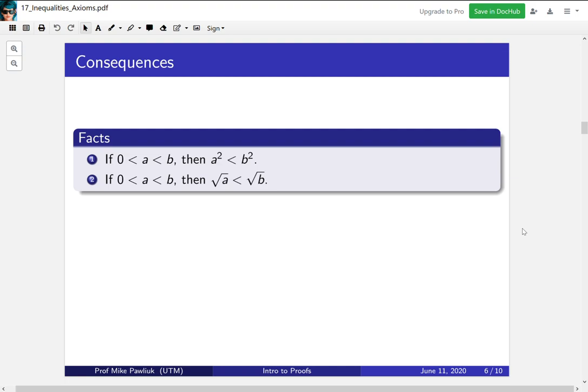Now besides the axioms, there are many other things that are true about inequalities. I've picked two facts that are true, and we're going to prove these using the axioms. The first one says that if a and b are both positive and a is less than b, then the squares have the same order as a and b. And the second one says that if you take the square root of a positive inequality, it maintains the inequality.